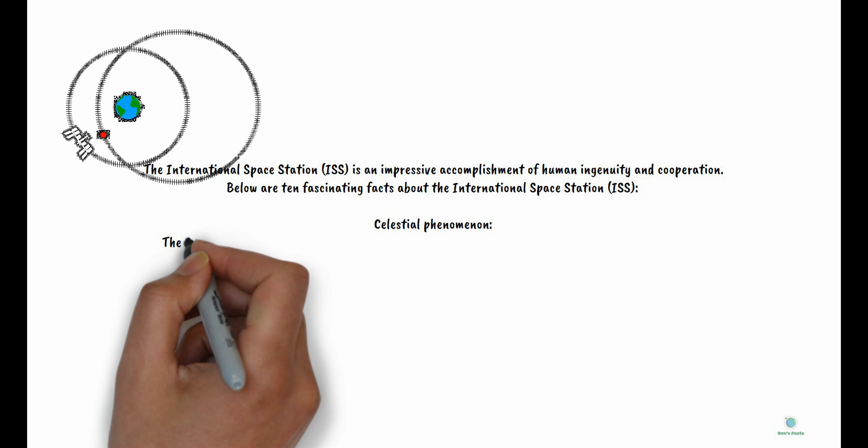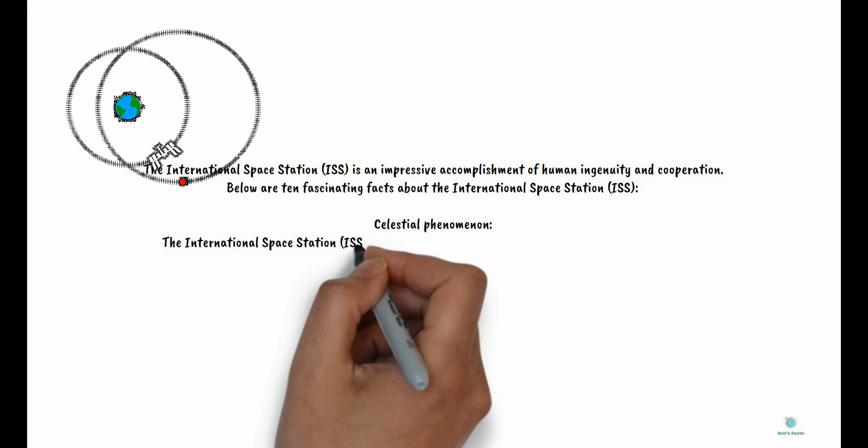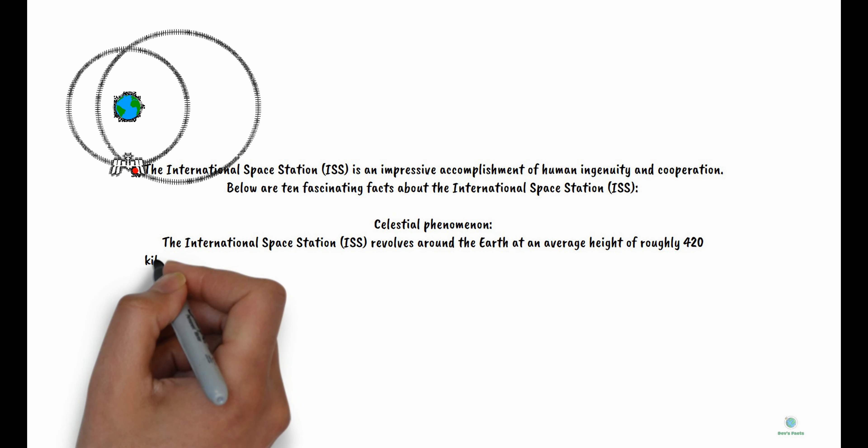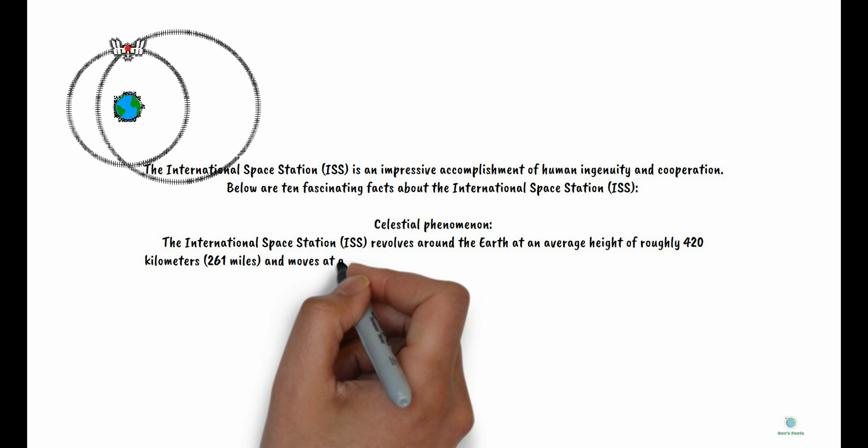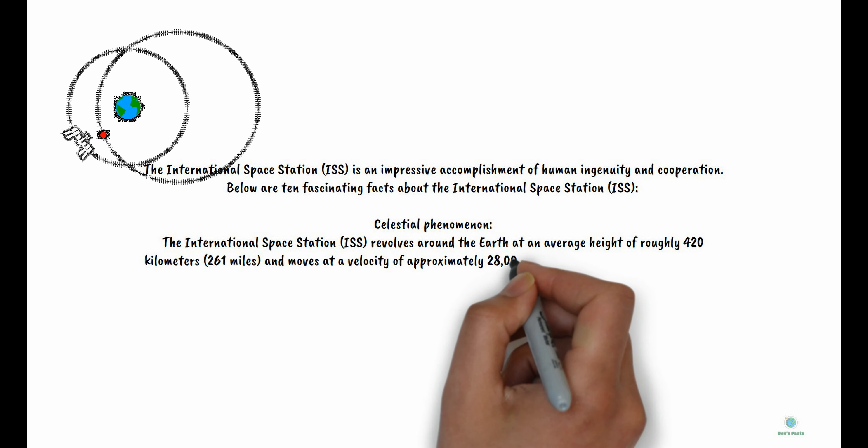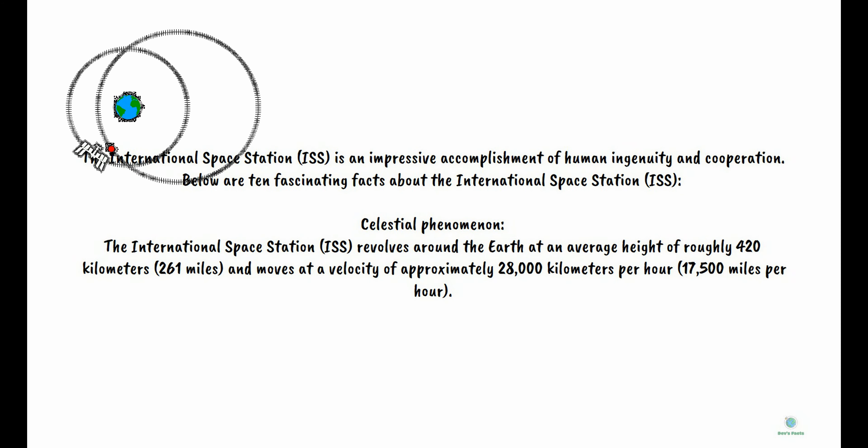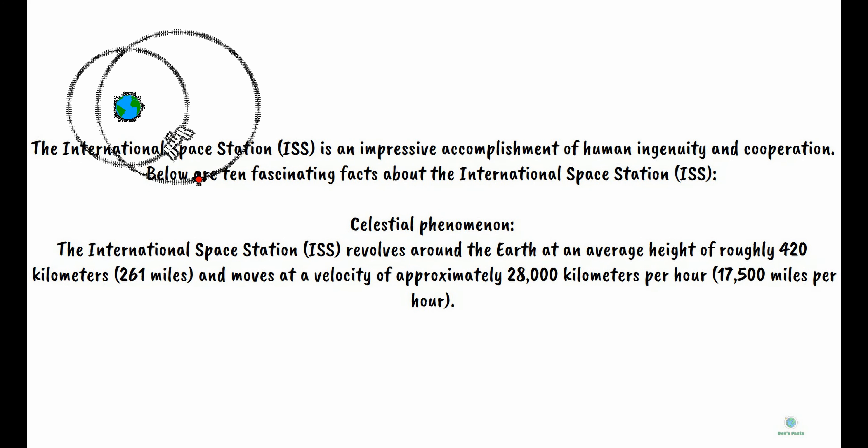Celestial Phenomenon: The International Space Station revolves around Earth at an average height of roughly 420 kilometers (261 miles) and moves at a velocity of approximately 28,000 kilometers per hour (17,500 miles per hour).